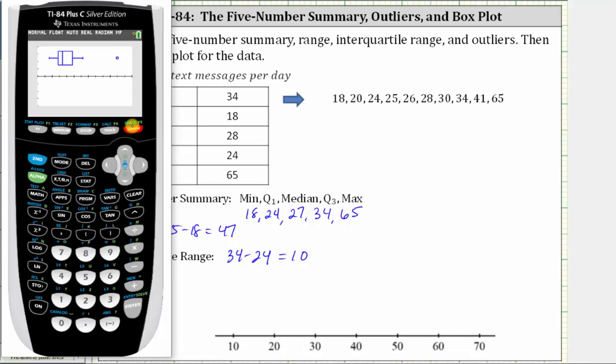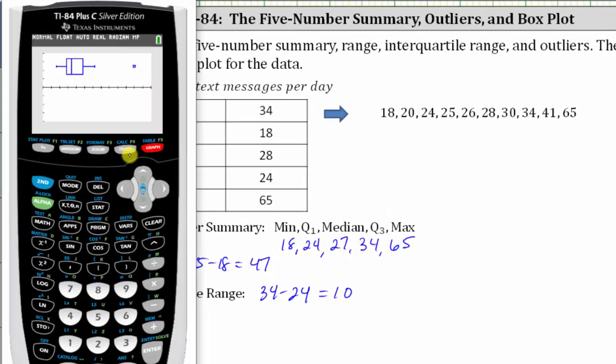And now we have our box plot. Any points to the left or right of the whiskers represent outliers. So this data has one outlier over here on the right. To determine the values to create the box plot and to determine the outliers, we press TRACE.